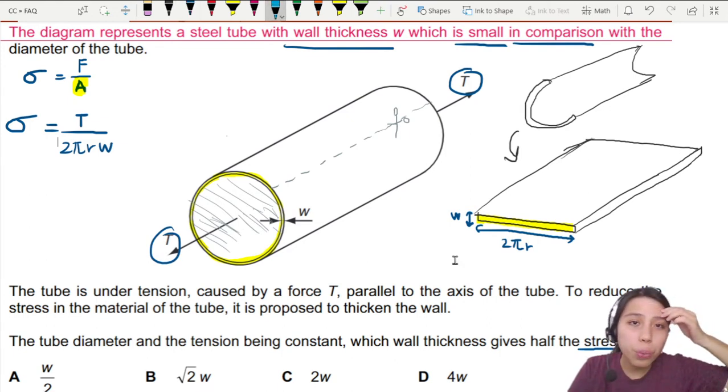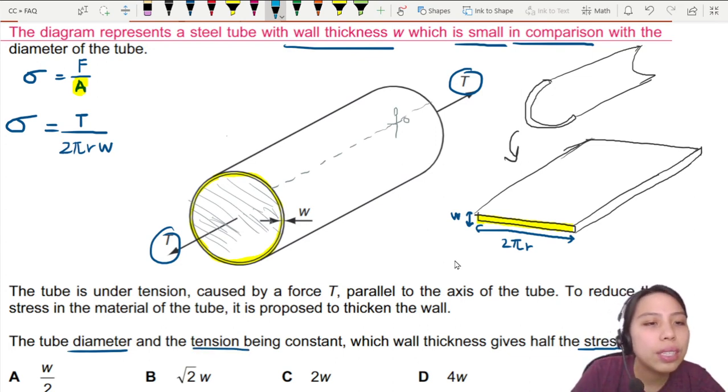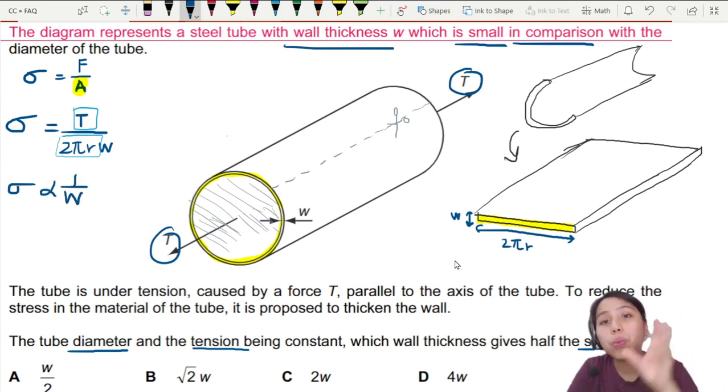What is constant here? We have a tube diameter constant. So radius is constant. Tension being constant. So I can say at the end of the day, all this is constant. This is also constant. All we have is sigma stress is proportional to 1 over the width of that wall.